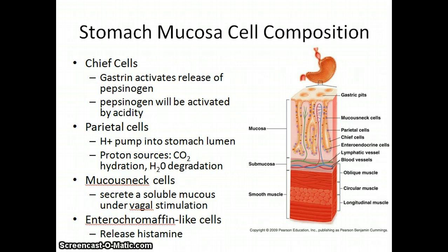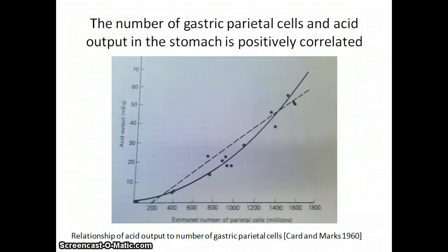Enterochromaffin-like cells release histamine — we will see how this is important later. As seen here, the number of parietal cells is positively correlated with acid output of the stomach, so these cells are responsible for producing stomach acid. Therefore, in treating chronic or acute acid reflux episodes, we must target parietal cells.